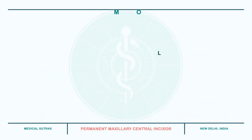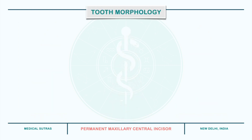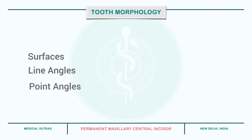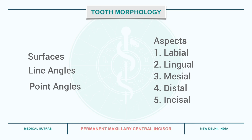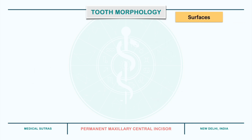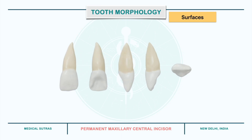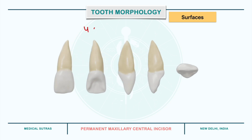Now coming to the tooth morphology. First we will identify the surfaces, line angles, and point angles, and then we will study the tooth from 5 different aspects: labial, lingual, mesial, distal, and incisal. The permanent maxillary central incisor has 4 surfaces and 1 incisal ridge.